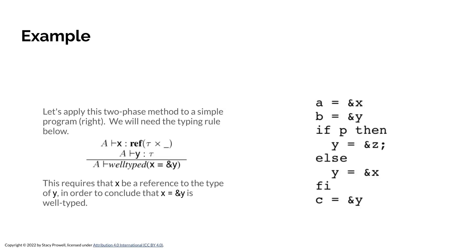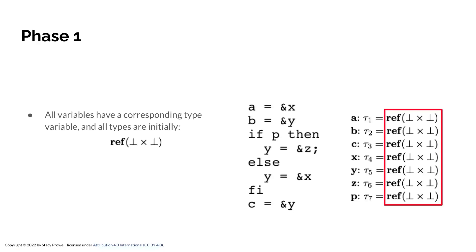We're going to apply this two-phase method to a simple program, and we'll need the typing rule which says: if A entails that X is a reference of type tau (the underscore means I don't care) and A entails that Y is of type tau, then it's okay to say X gets the address of Y — X becomes a pointer to Y. X is a reference to something of type tau, and Y is of type tau, so it's valid for X to reference Y.